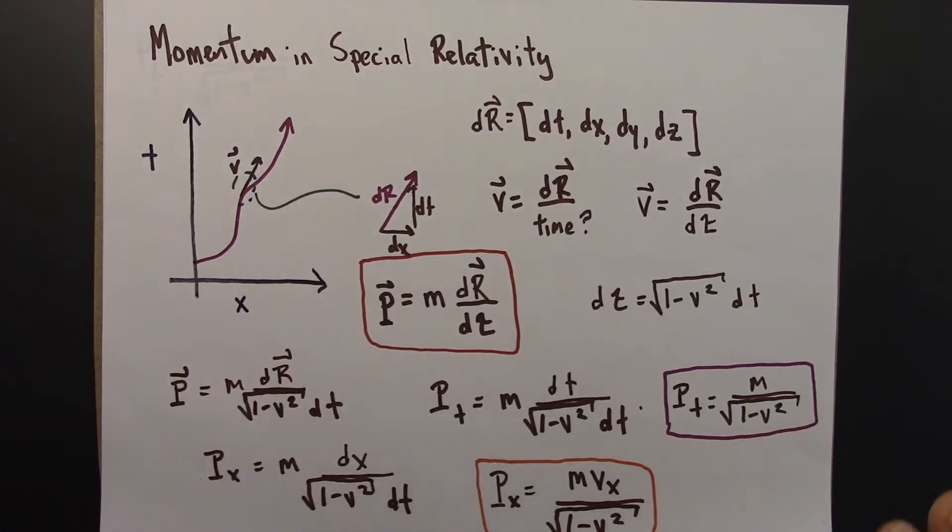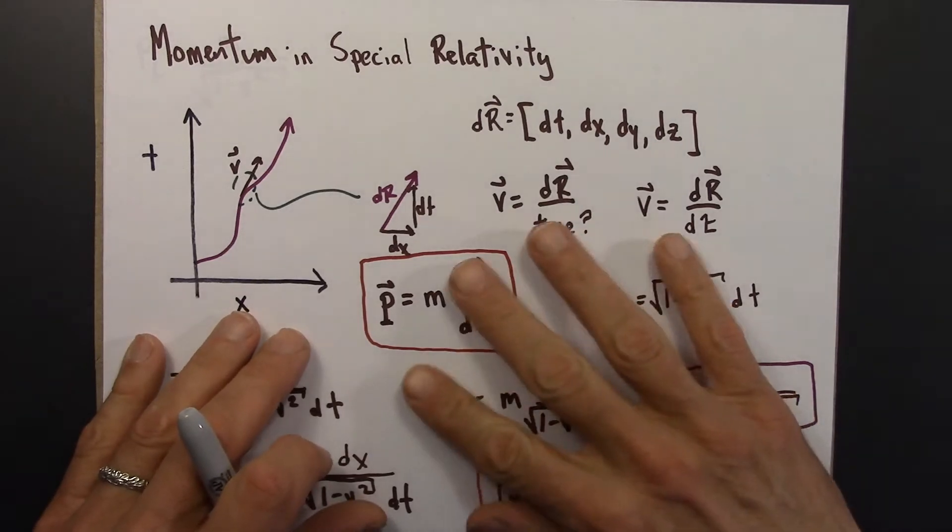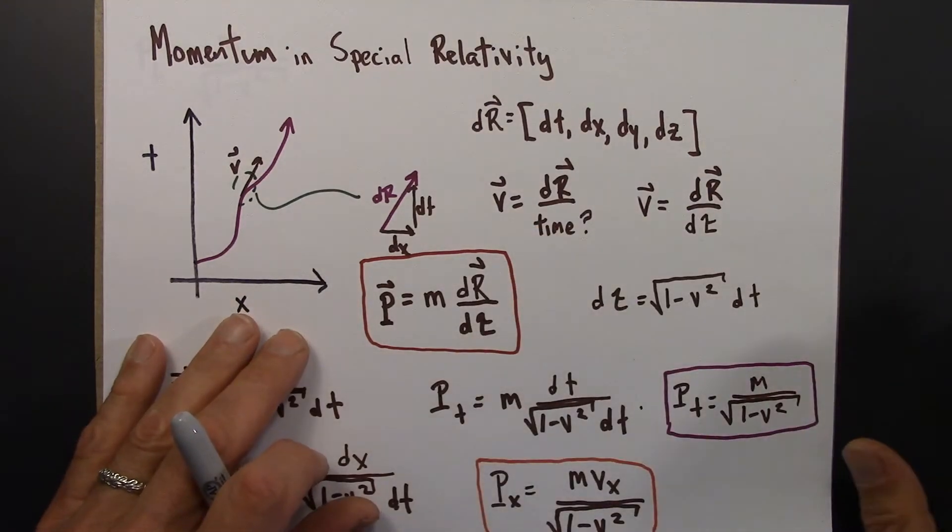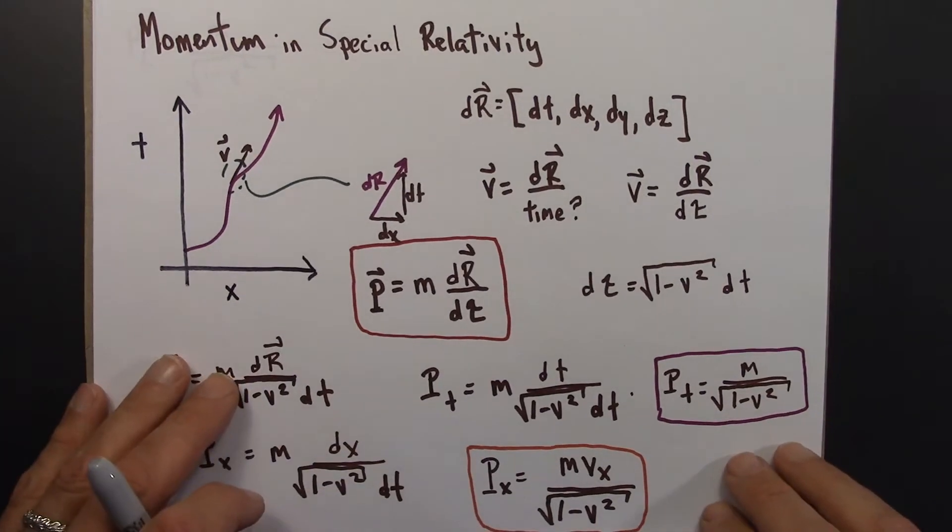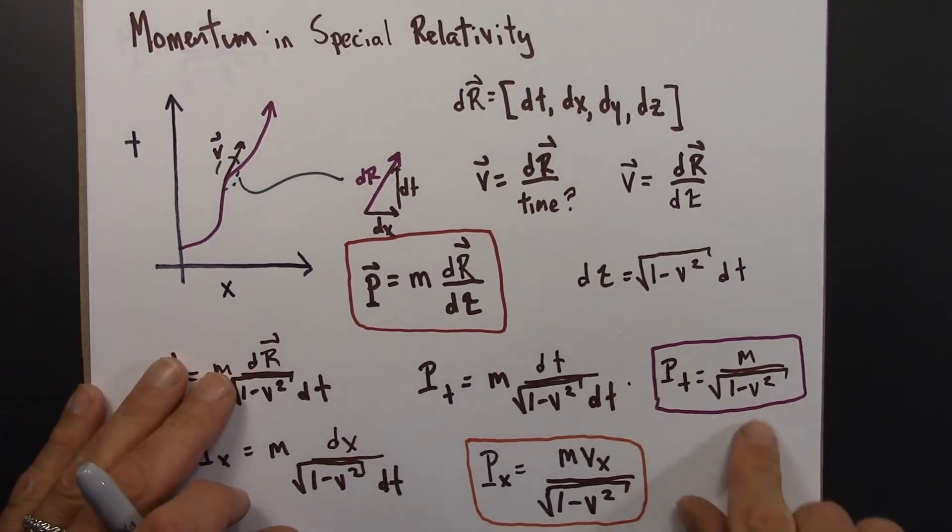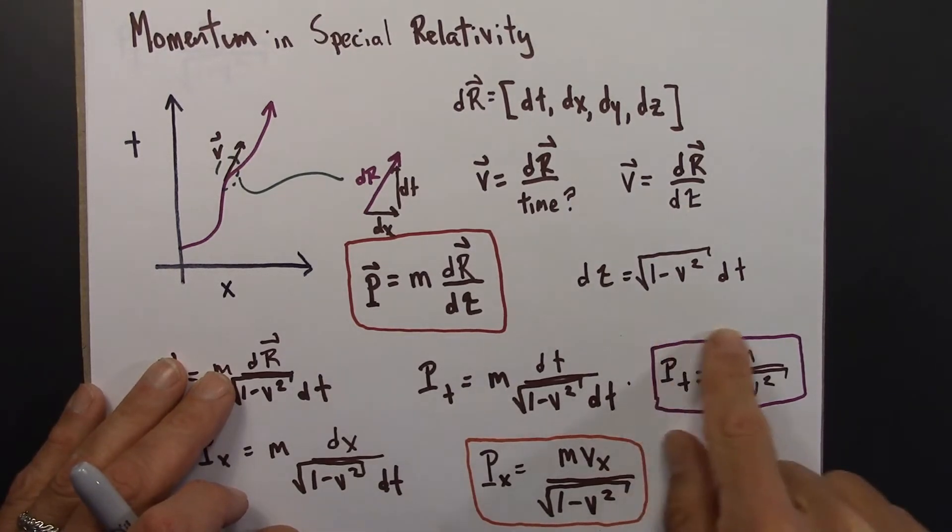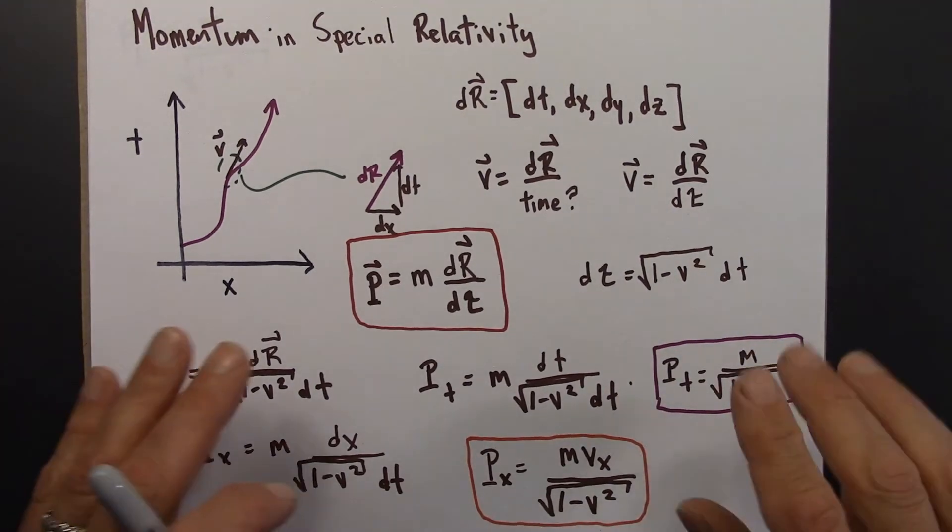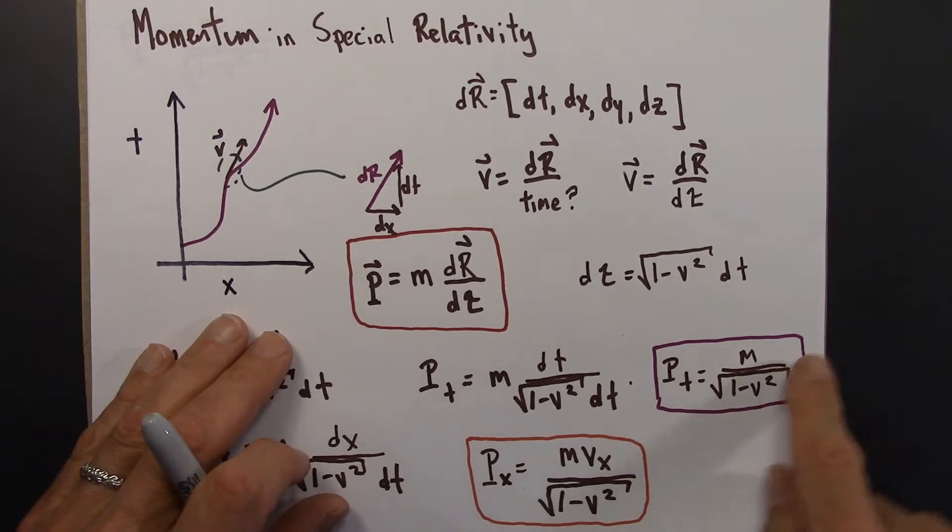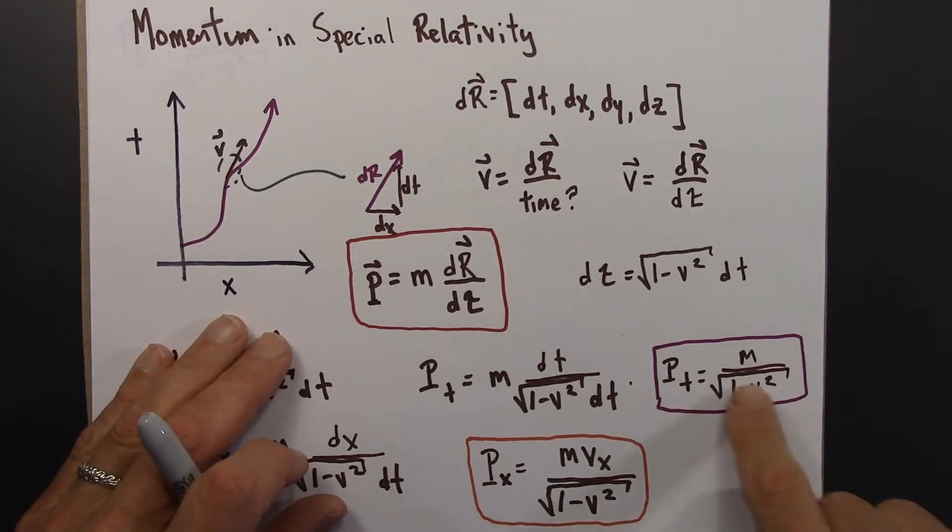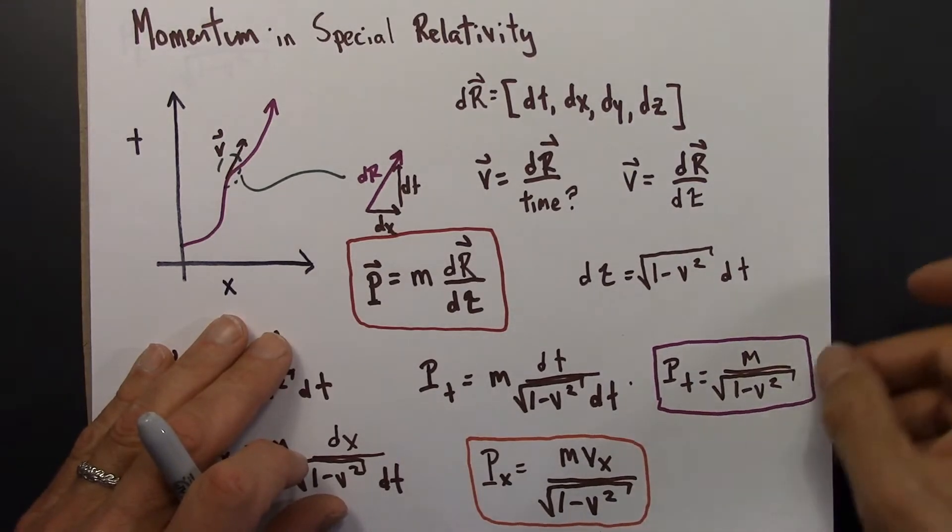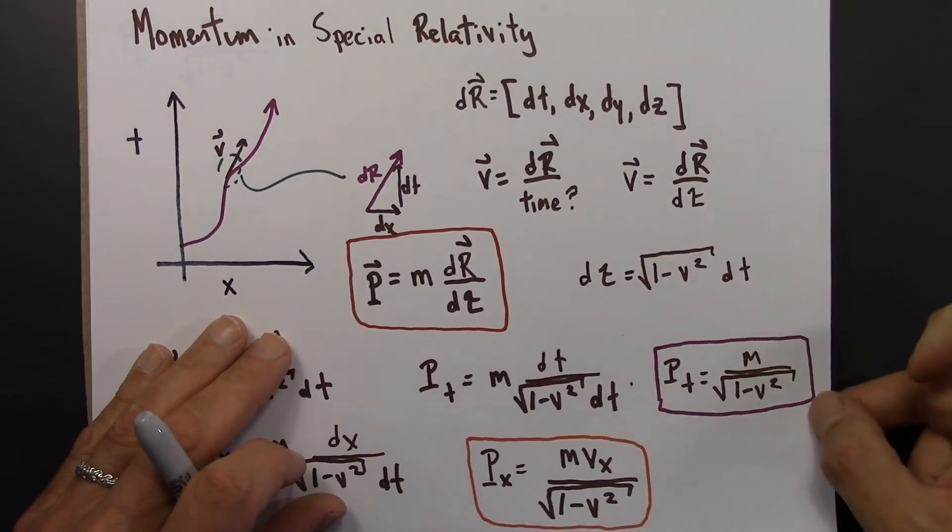Alright, so great. Four-momentum is in really good shape with special relativity, but what is the four-momentum? So we're going to start thinking about that. We're going to focus in this video on the time component, the time aspect of four-momentum. So that's given by this formula, which we arrived at by doing dt over dt tau, with an m there. So let's focus on this formula.